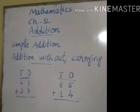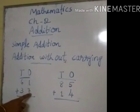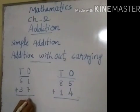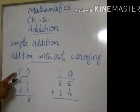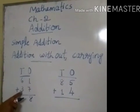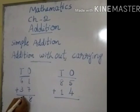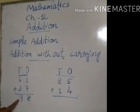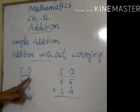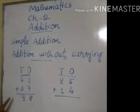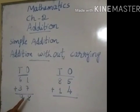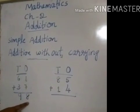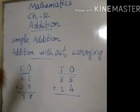Let us add 7 plus 1 is equal to 8. Now, let us add tens. 6 plus 3 is equal to 9. Now, 9 tens and 8 ones. That is number 98. So, 61 plus 37 is equal to 98.